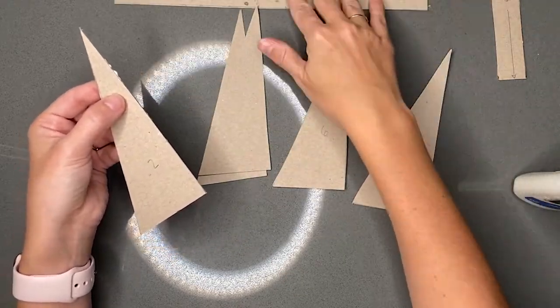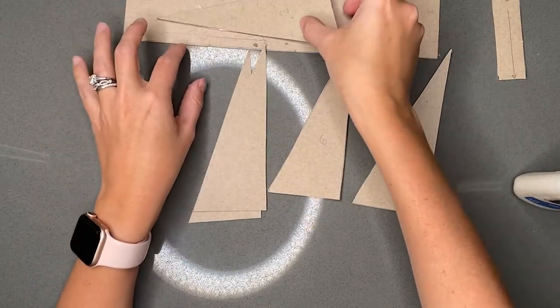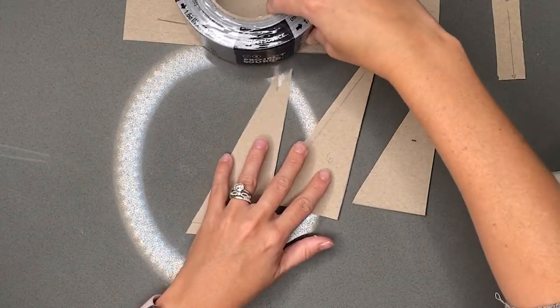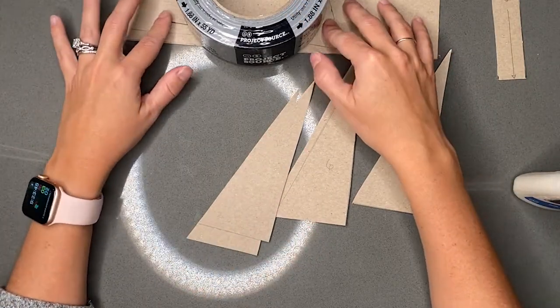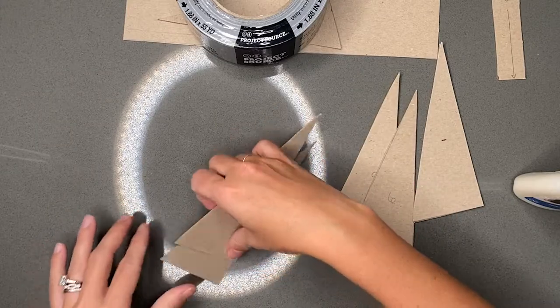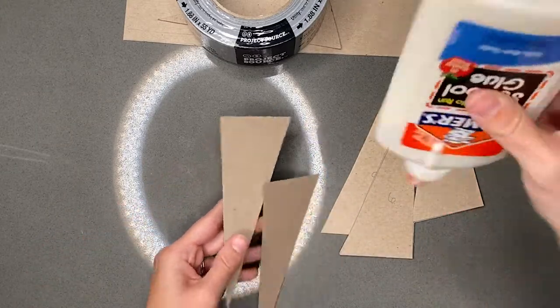I'm going to place this down so I don't get glue on my counter. And I'm just going to take my duct tape and weigh it down on it so that it stays attached. If you have paper clips, you can clip them together and that will clamp them together so that they adhere well.